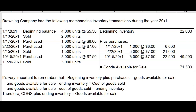Hi everybody. Welcome back to our continuing discussion of inventory cost flows. In this video, we will discuss how Browning can apply FIFO to their inventory merchandise transactions, calculate cost of goods sold for each of their sales, and calculate the ending inventory after each sale and at the end of the year. For those working with printed PDF worksheets, you will need the data worksheet as well as the FIFO worksheet.